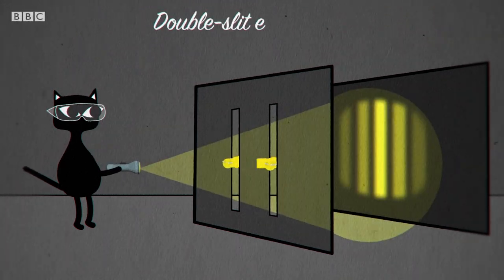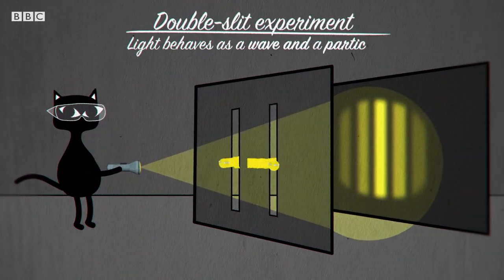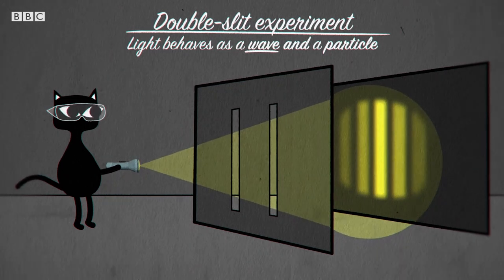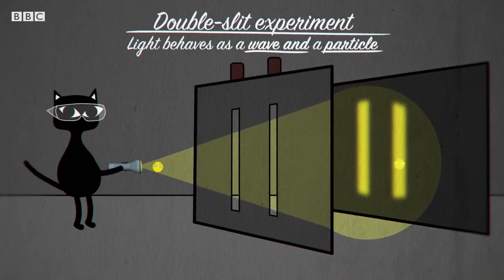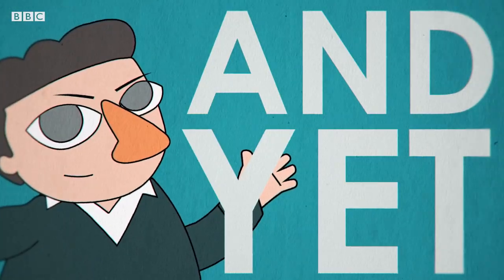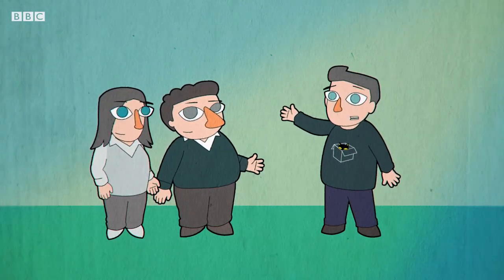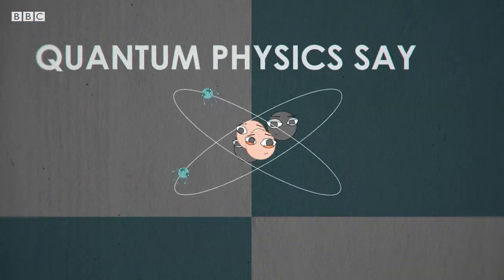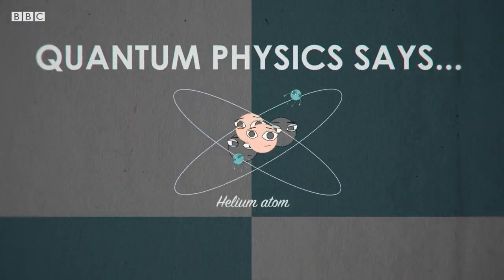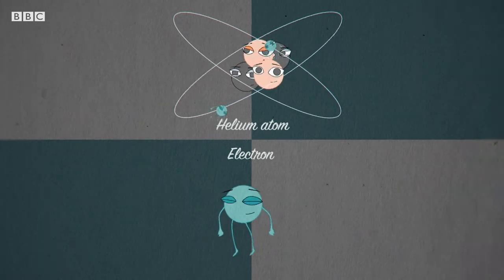Quantum physics, by many measures, is actually the most successful theory in the history of science in terms of how well it matches our experimental results. And yet, quantum physics says that atoms and subatomic particles behave in odd ways.